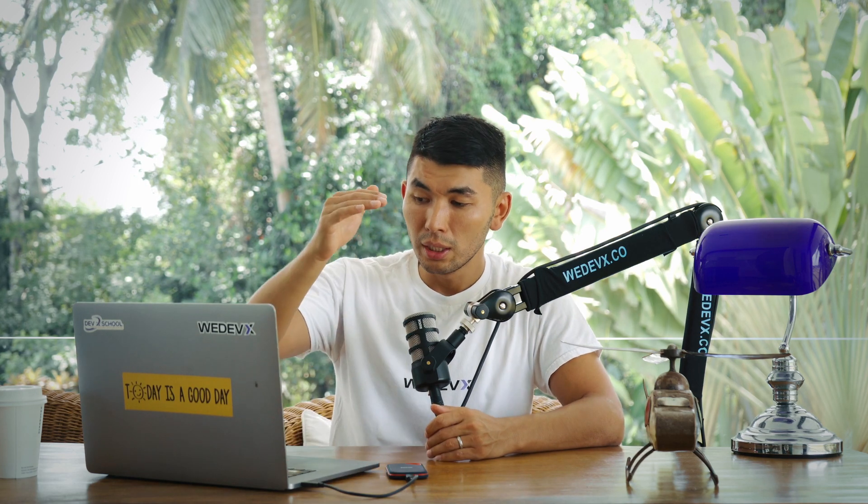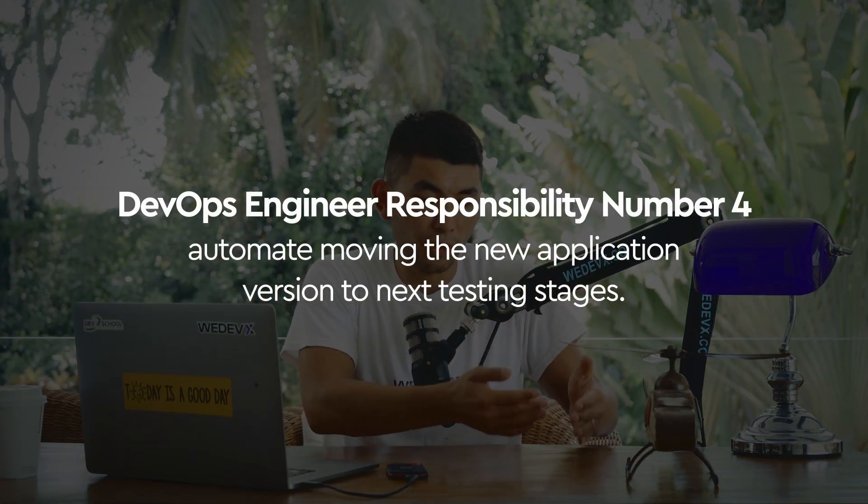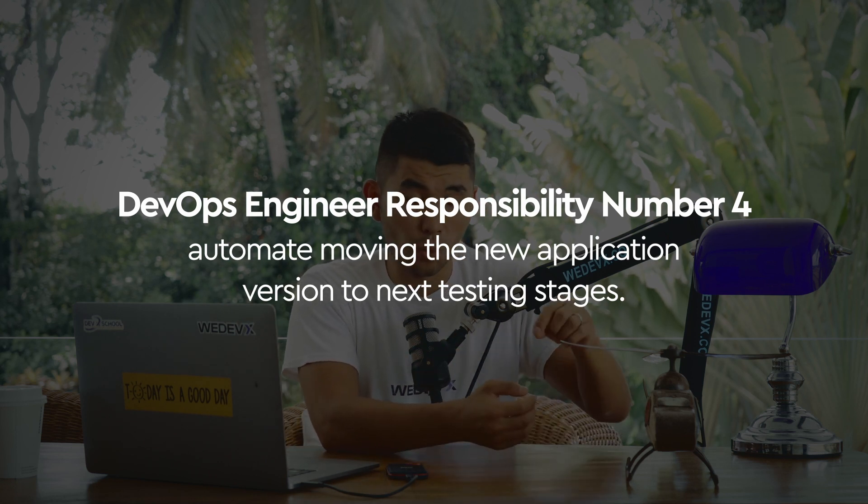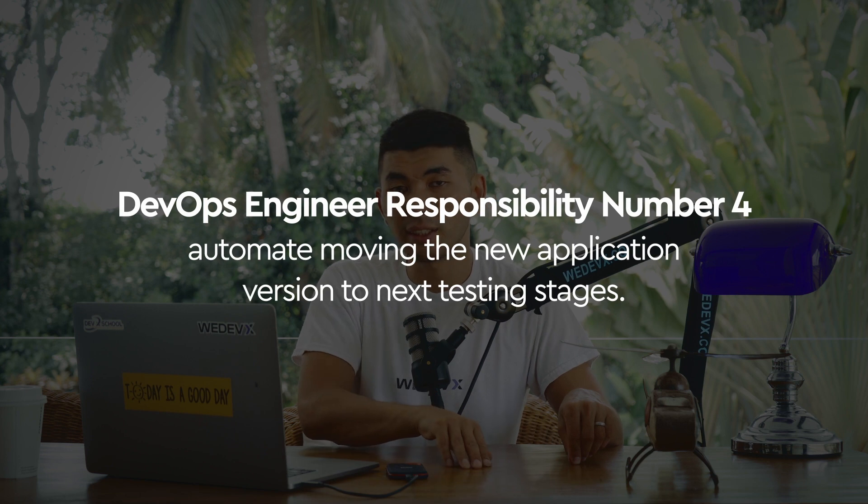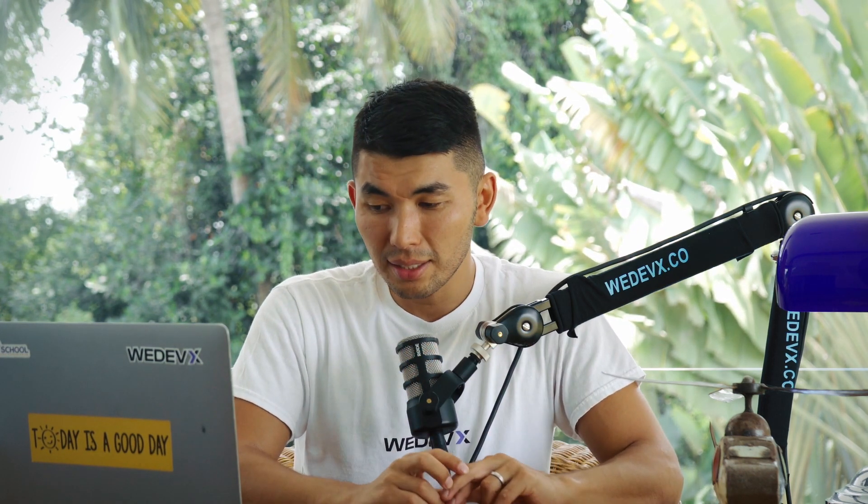There are multiple testing stages. Once the first test team finishes, they need to notify the next team for more comprehensive testing — this process repeats across three or four test stages. DevOps engineers automate this entire notification system. Finally, pushing to production and making it available to users also involves many manual steps, which DevOps engineers automate as well.